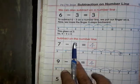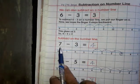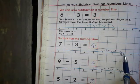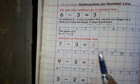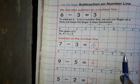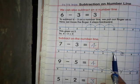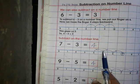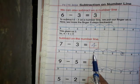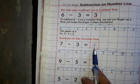आगे हम देखते हैं, subtract on the number line. यह है 7, तो हम अपनी finger को 7 पर रखेंगे। Minus है 3, यहां से 3 step backward जाएंगे — 1, 2, 3 step backward आए। तो कहां पहुँच गए? 4 पर। तो answer आता है 4.